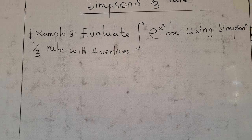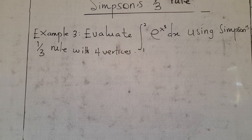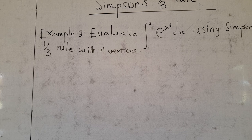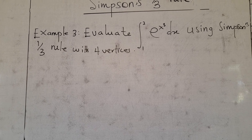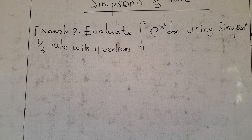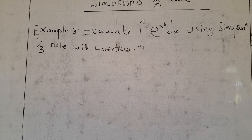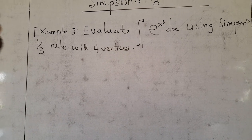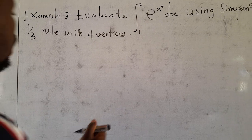You can pause the video and try solving this yourself. After that, compare your answers with mine. The problem is: evaluate the integral from 1 to 2 of e^(x³) dx using Simpson's 1/3 rule with 4 subintervals. Since 4 is even, we can use Simpson's 1/3 rule.